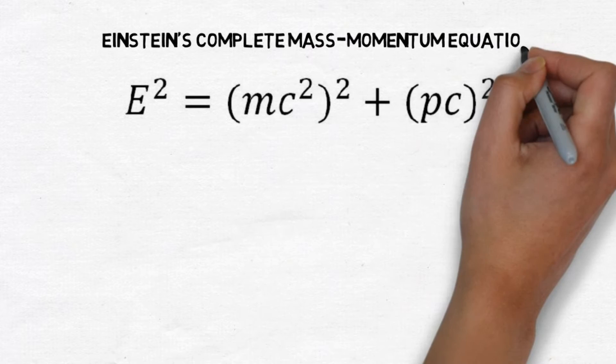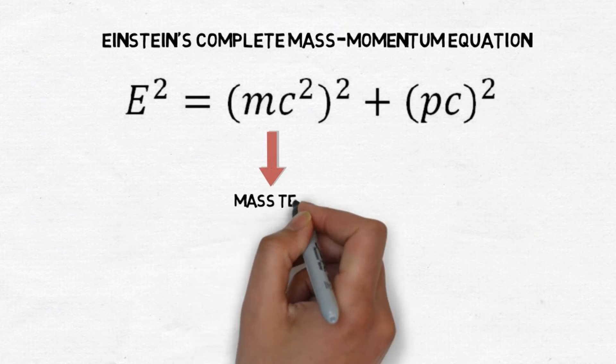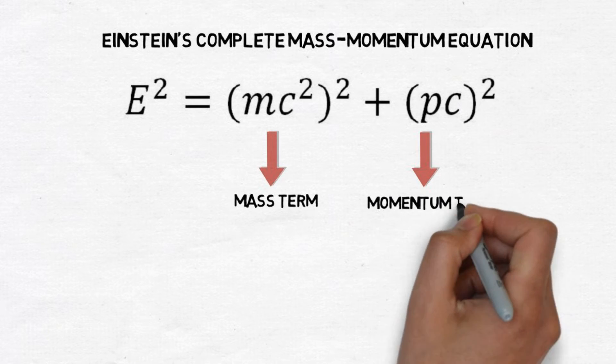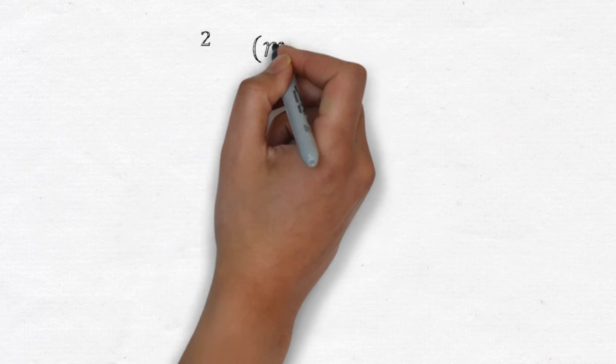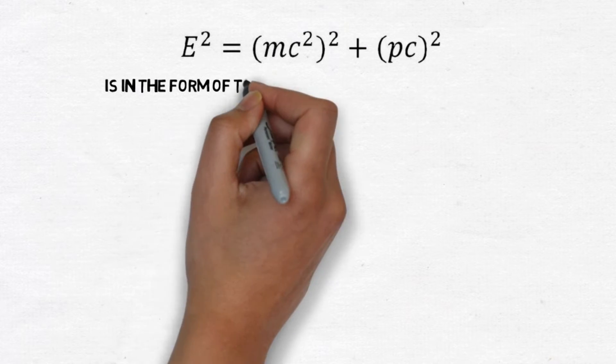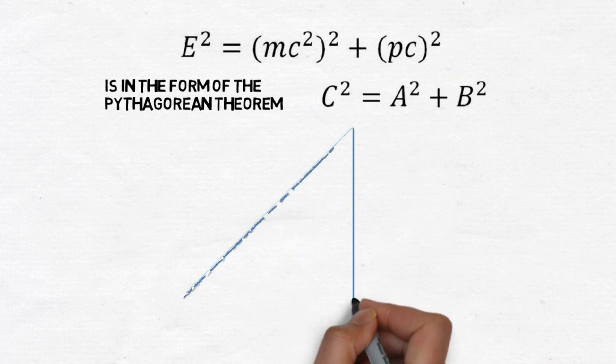Before we can extend our picture model, we need to go back and finish some math. It turns out that E equals mc squared is just one term in Einstein's energy equation. There is also a momentum term, where momentum equals velocity times mass. Einstein's equation is in the form of c squared equals a squared plus b squared, which we know to be Pythagorean's theorem equating the sides of a right triangle. Let's label the legs of this triangle as a, b, and c.